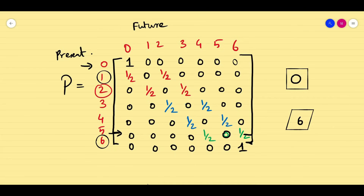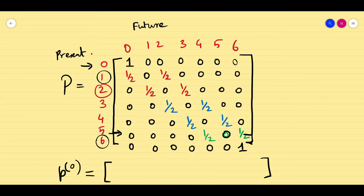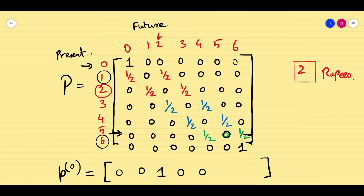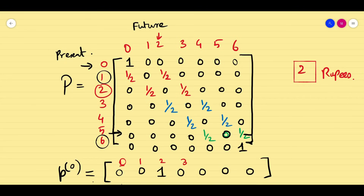This transition probability matrix is not easy to work with via matrix multiplication. Next, we have to find the initial vector p0. Initially the gambler has 2 rupees in his hand, so the probability of being in state 2 is 1, and all other states have probability 0. Writing the states 0, 1, 2, 3, 4, 5, 6 — the initial probability vector p0 is: 0, 0, 1, 0, 0, 0, 0.